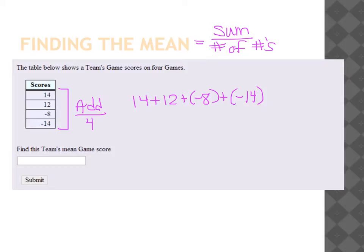So instead of just adding 14 plus 12 plus negative 8 plus negative 14, we can rearrange these numbers. For example, 14 plus negative 14, taking the first and the last numbers together, are very quick to add together because they are opposites. And when you add opposites, you get an answer of 0.